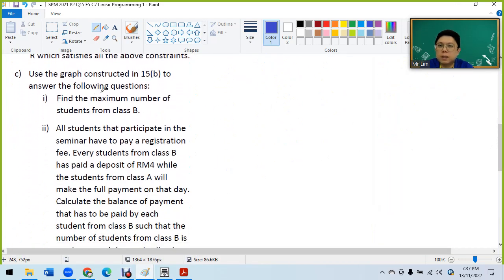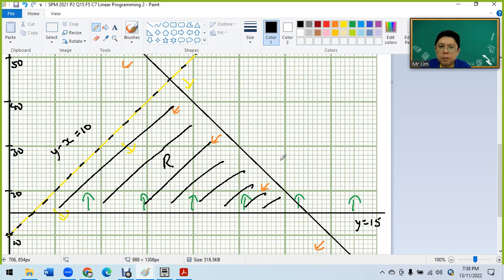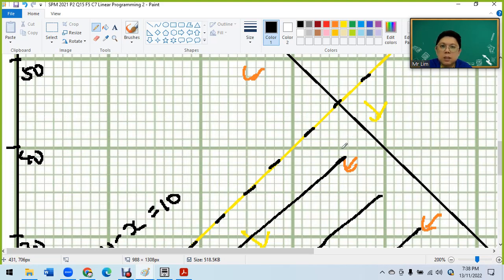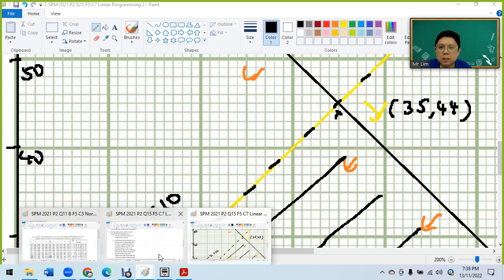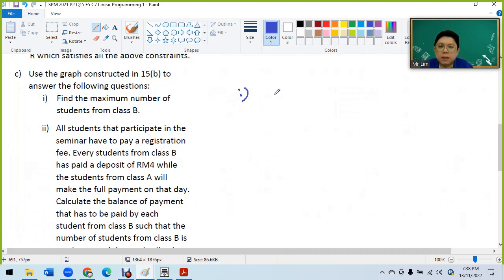Find the maximum number of students from class B. B is Y, so what's the maximum Y? Looking at the region, Y can reach 40, 41, 42, 43, 44. The maximum is 44 students.